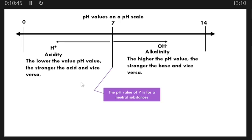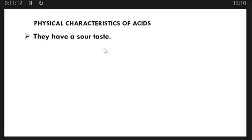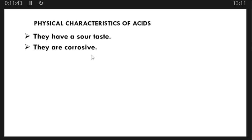Now let's look at the physical characteristics of acids — these are characteristics we observe when we interact with acids physically. Number one: they have a sour taste, meaning any substance that tastes sour is suspected to contain acids. Another characteristic is that they are corrosive — they wear out substances they come into contact with. For example, if acid drops on your clothing, it is likely to corrode it, and even your skin is likely to be burned.